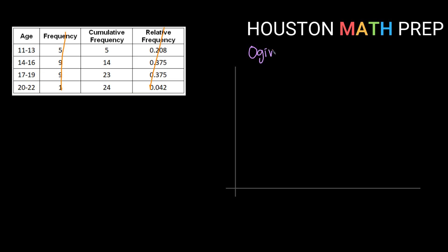So this is ogive for ages. This is going to be ages along the bottom axis, and those are in years. Just like before, I'm going to put each one of my classes along the horizontal axis. So I've got my 11 to 13 here, my 14 to 16 here, my 17 to 19, and my 20 to 22.